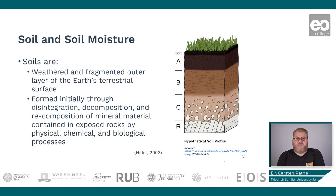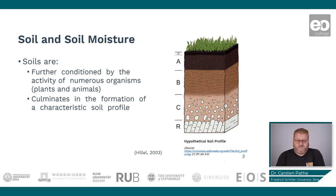But first of all let's have a look at the soil. So what is a soil? A soil is a weathered and fragmented outer layer of the Earth's terrestrial surface and it has been formed initially through the disintegration, decomposition and recomposition of mineral material contained in exposed rocks by physical, chemical and biological processes. They are further conditioned by the activity of organisms, plants and animals, and in the end it culminates in the formation of a characteristic soil profile.